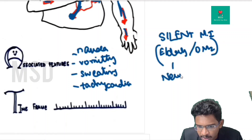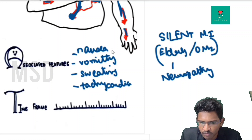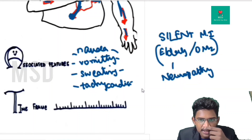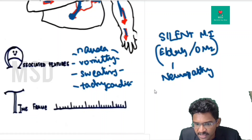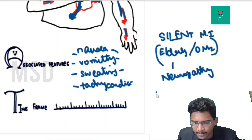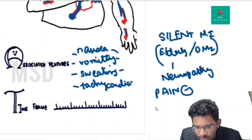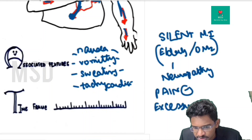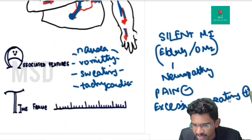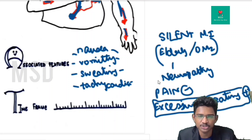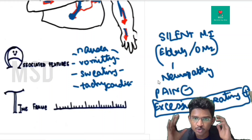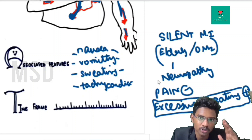In silent MI, due to neuropathy, sympathetic features such as nausea, vomiting, sweating, and tachycardia are not seen. However, one feature is preserved: excessive diaphoresis or sweating, because it is mediated by acetylcholine receptors. So these patients will present with excessive diaphoresis. Don't miss out on elderly and diabetic patients — it might be a silent MI.